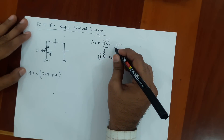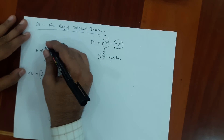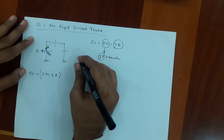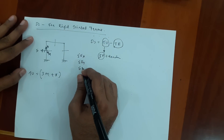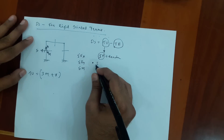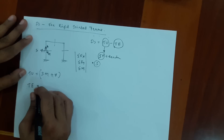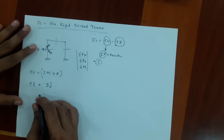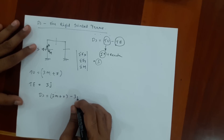To define total number of equations of equilibrium in a rigid-jointed frame: at any joint, we use summation of Fx, summation of Fy, and moment. So each joint has got 3 equations of equilibrium. Total number of equations of equilibrium is 3J, where J is the number of joints. Therefore, DS equals 3M plus R minus 3J.